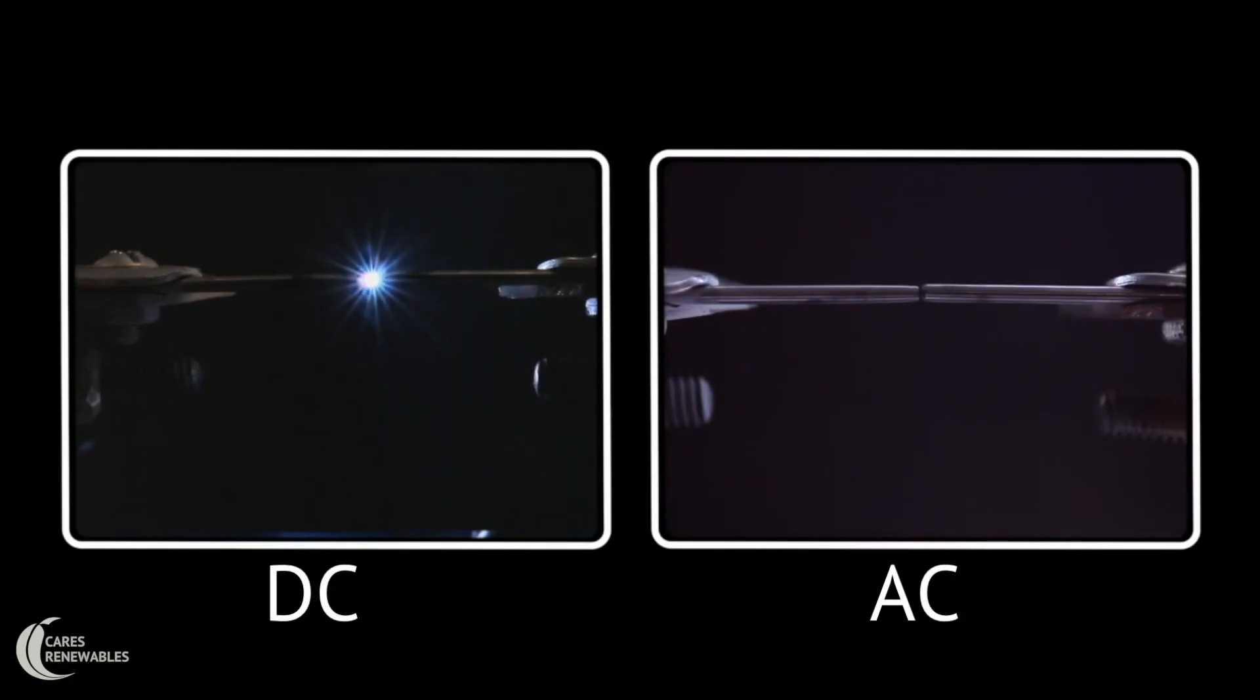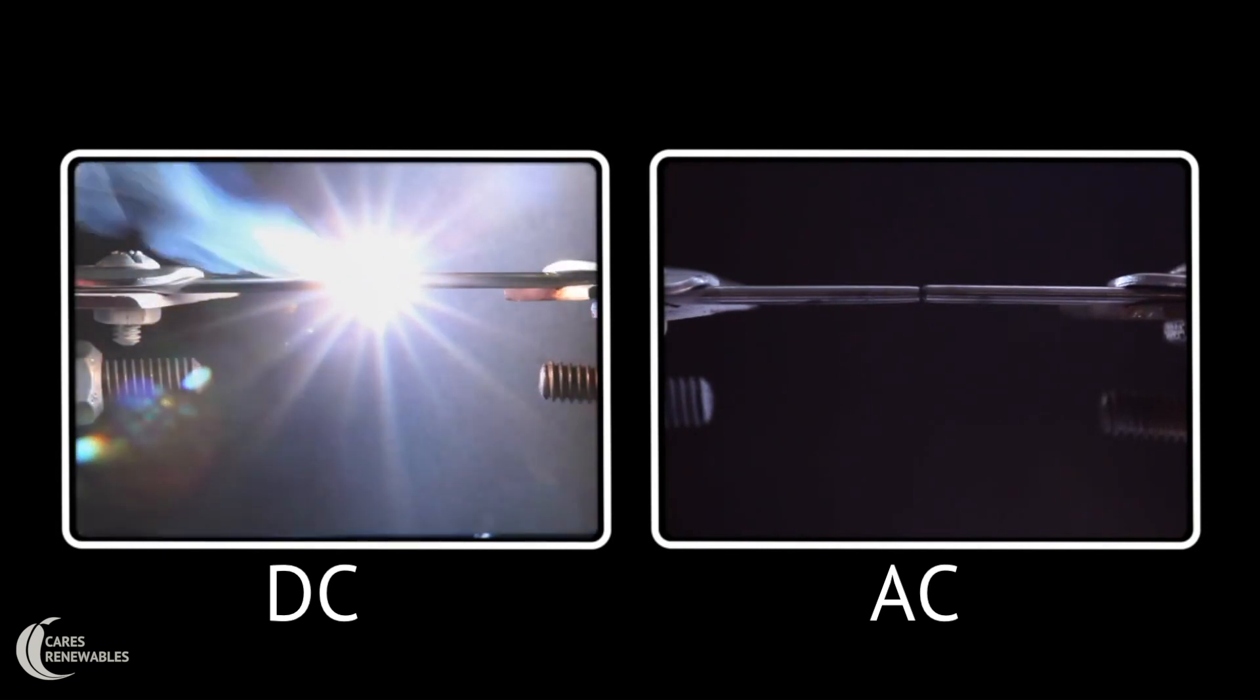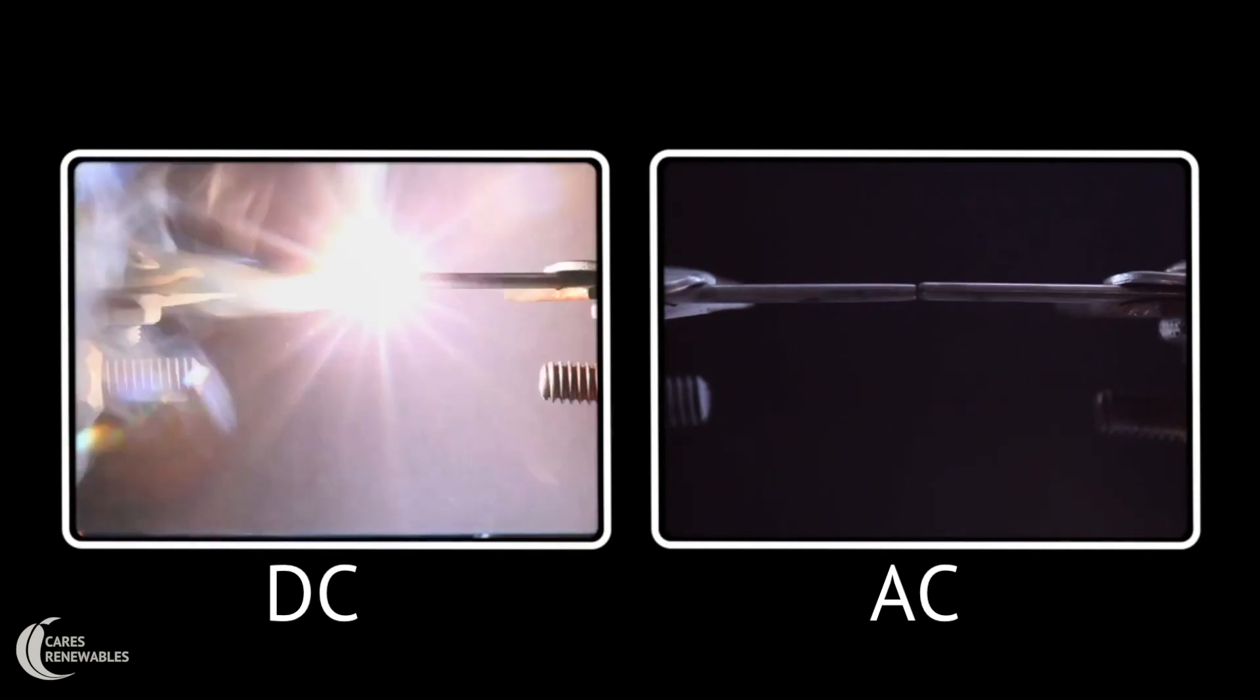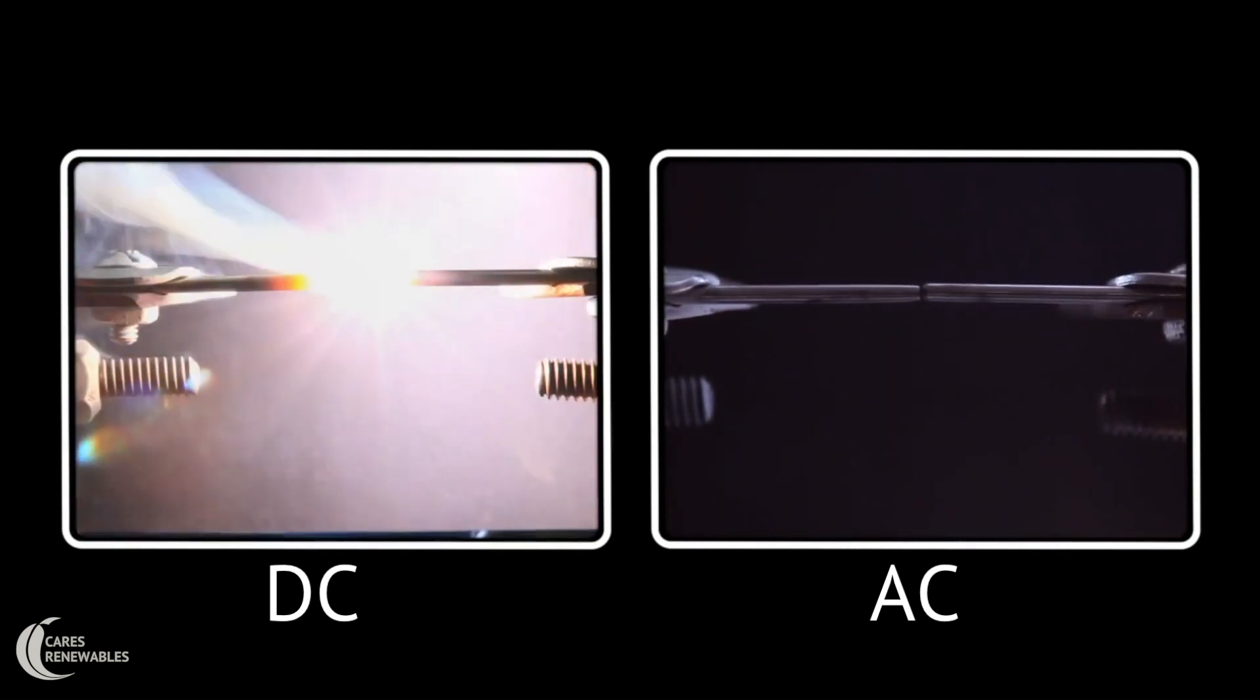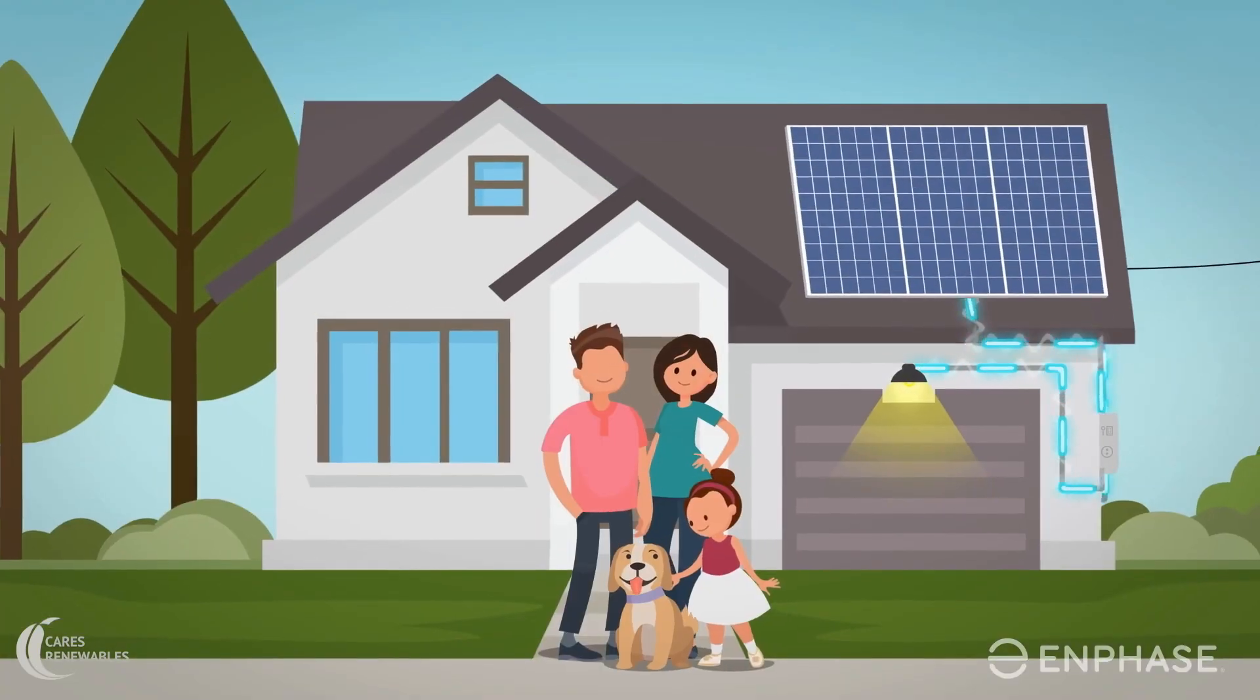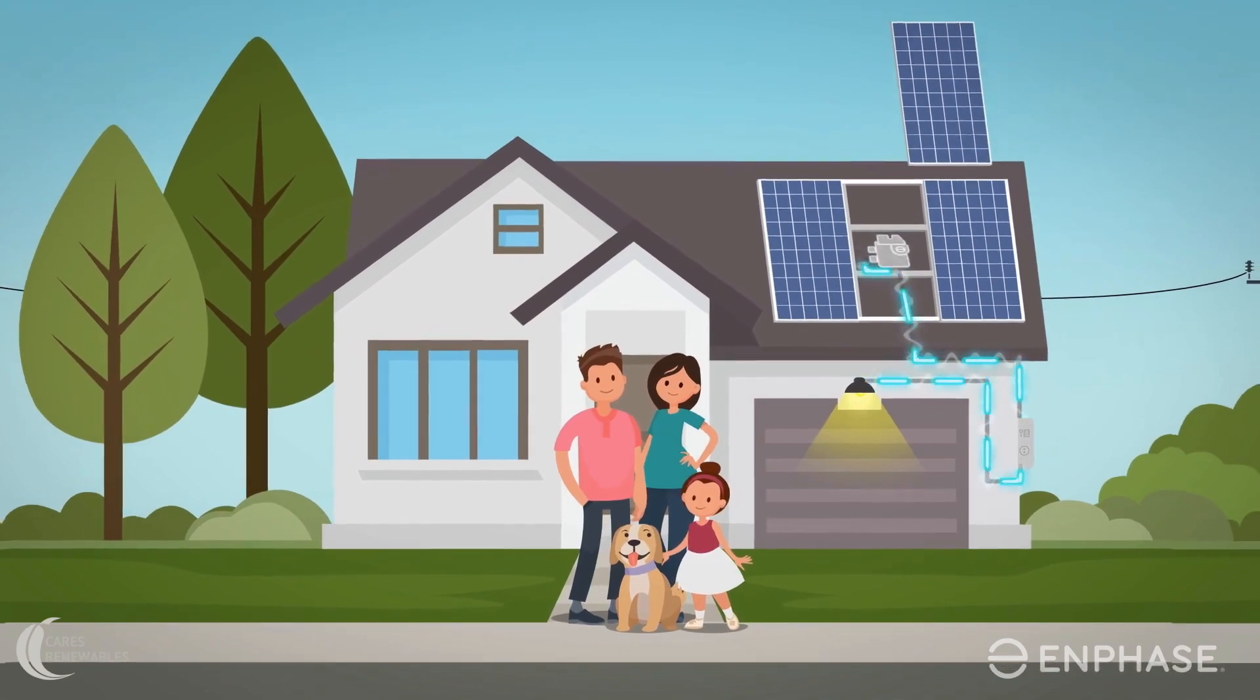Let's look at a practical demonstration of AC and DC faults in a lab setting. As you can see, the DC arc on the left side is far stronger and dangerous than the AC arc. When it comes to safety, the choice is clear. Enphase is the safest solar inverter in the world.